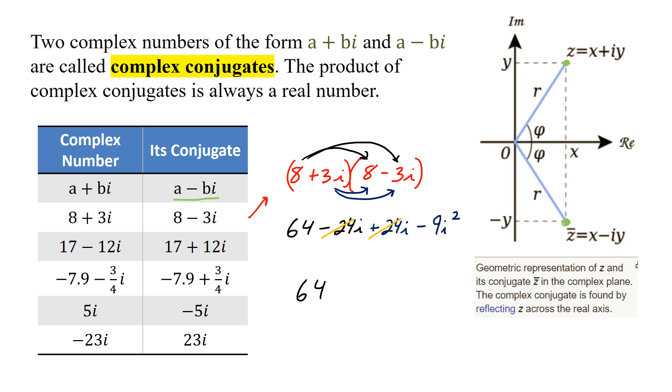Negative 9 and i squared, we know from before, is negative 1. Negative 9 times negative 1 is positive 9, and our grand total simplifies to 73. You'll notice that this will happen anytime you multiply two complex conjugates, you will end up with a real number. Question to think about: is that number always, sometimes, or never going to be positive? Well, we know it's sometimes, but is it always?